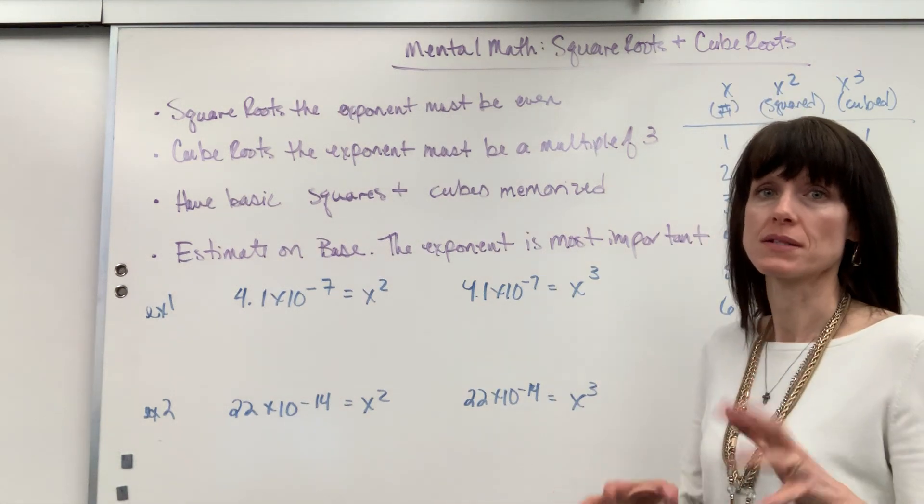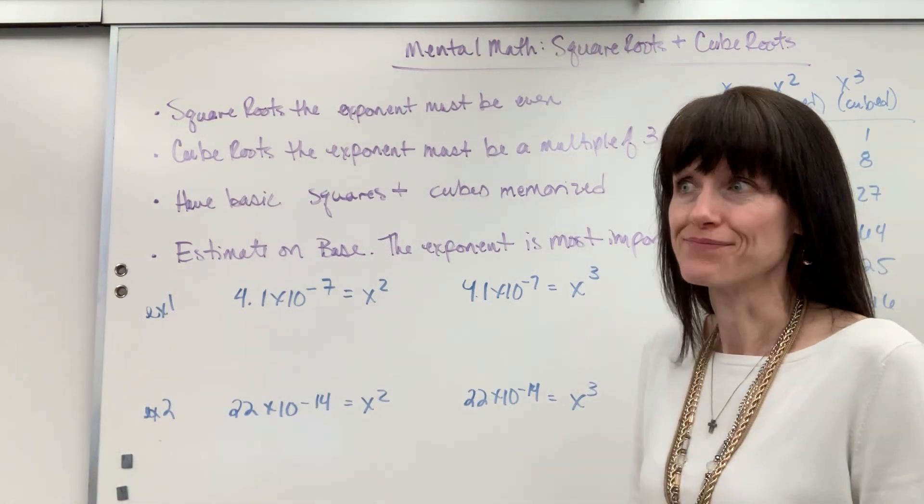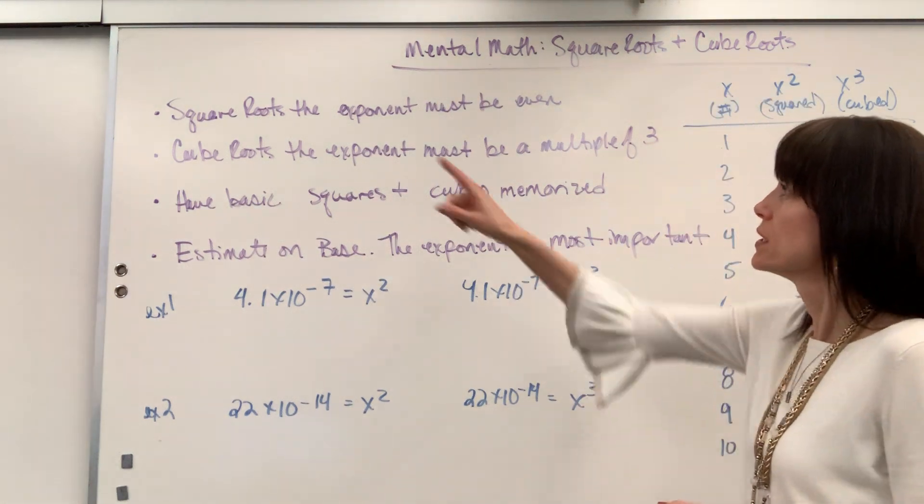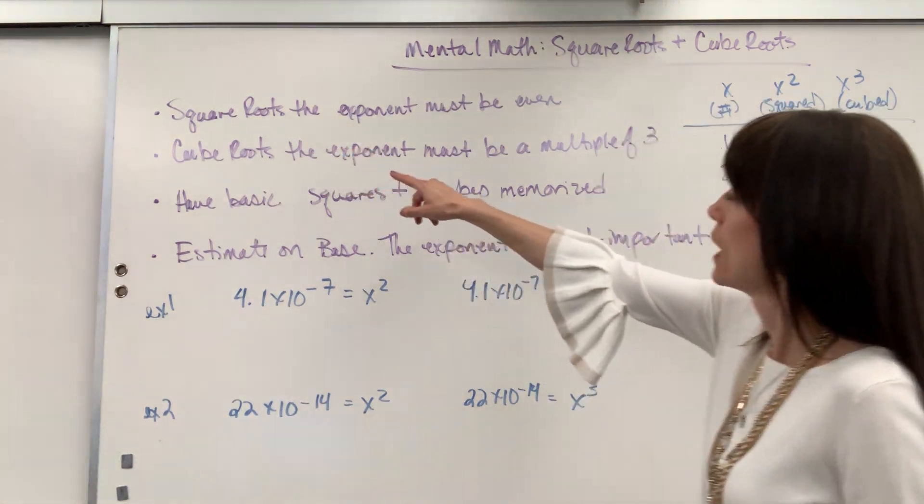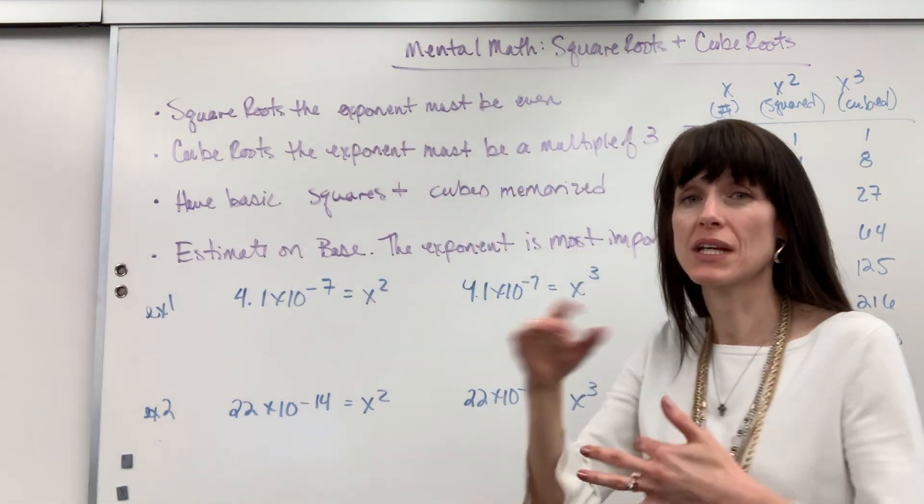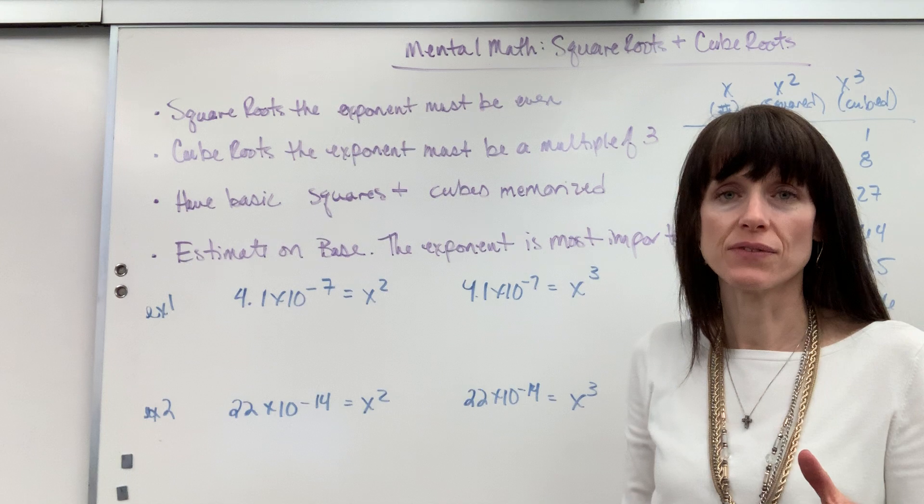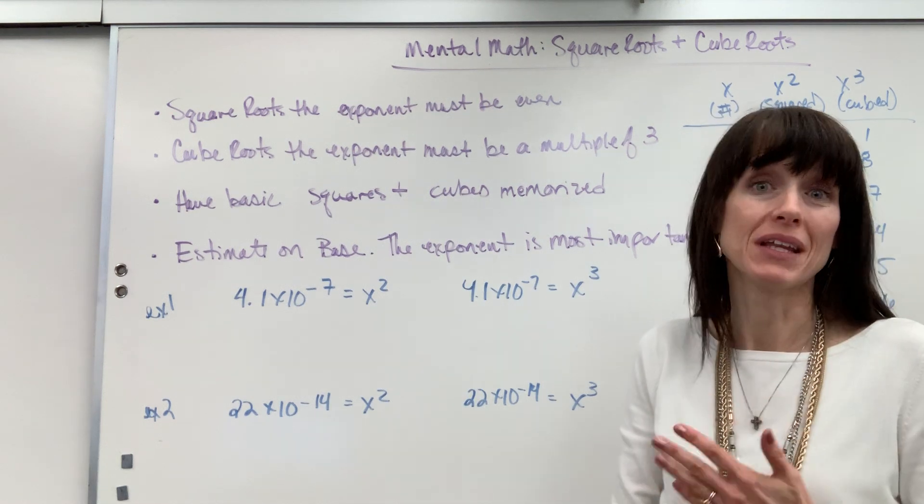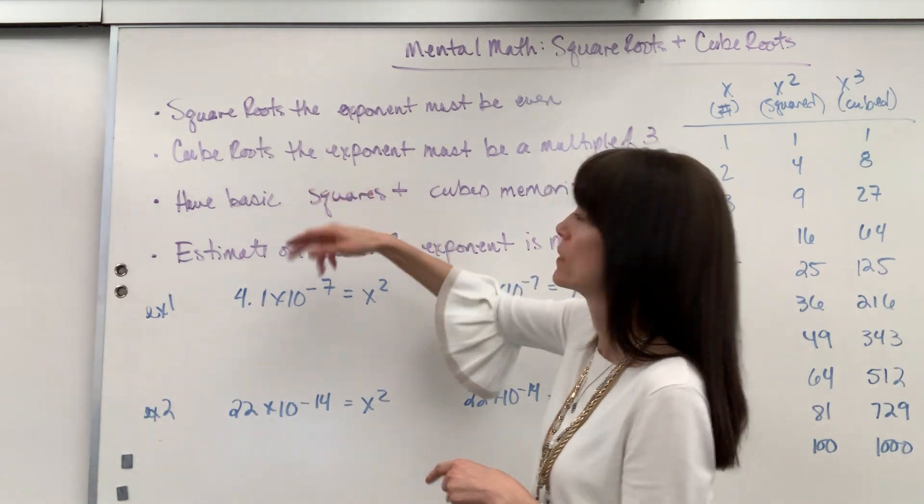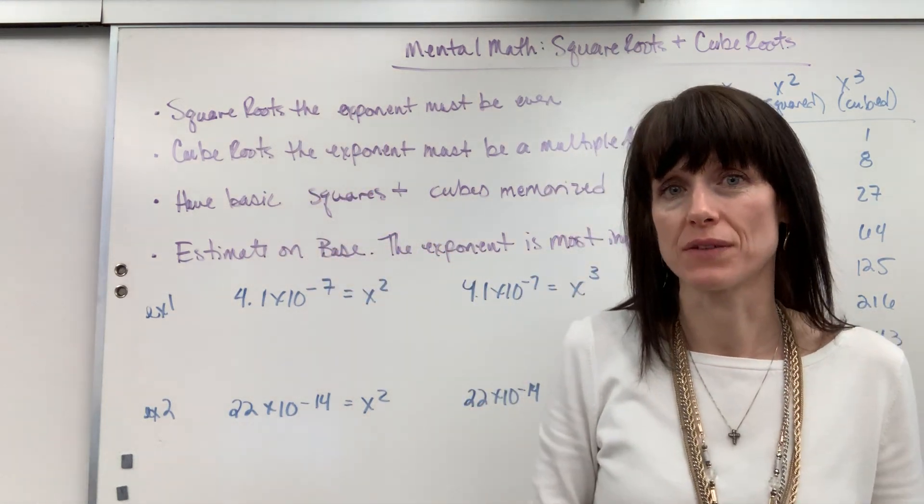Here are some helpful hints to assist you. First, square roots - the exponent must be even. So if you're taking a square root, make sure that the scientific notation has to be an even number. Now cube root is a little bit different. If you're doing a cube root, the exponent has to be a factor of 3.